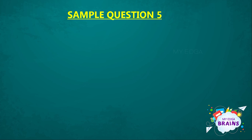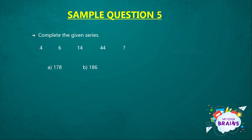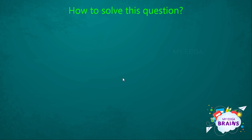Next is sample question 5. Complete the given series: 4, 6, 14, 44, and the next element is missing. The options given are: option A 178, option B 186, option C 218, and option D 224. It's a bit difficult question. Let's see how we can solve it.